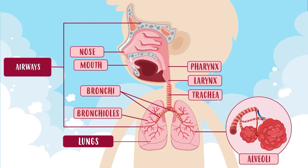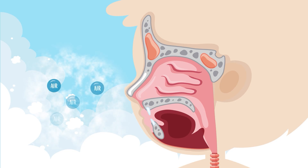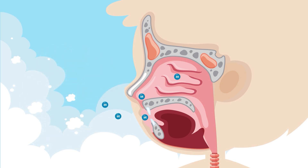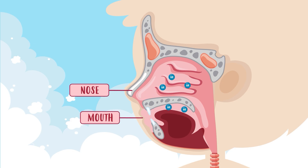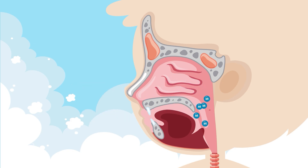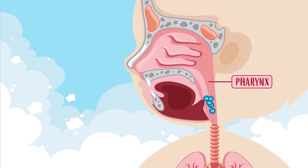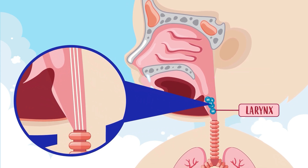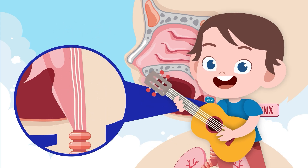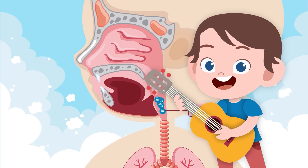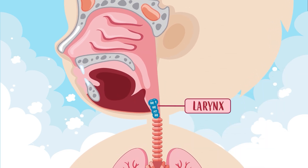Now let's take a look at how the respiratory system works. When we breathe in, air enters our body through our nose and mouth. The air then passes through the pharynx and into the larynx. Did you know that the larynx contains the vocal cords, which allow us to speak or sing? La la la la la — they are like the strings of a guitar. When they vibrate, they produce the voice.